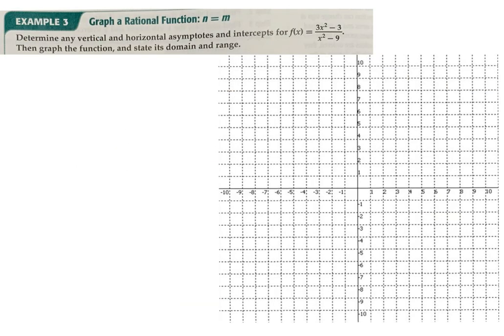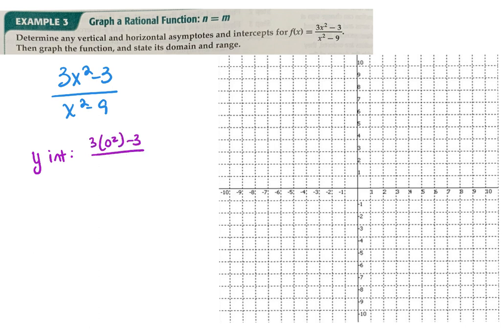Determine vertical and horizontal asymptotes and intercepts, then graph the function. We have 3x squared minus 3 over x squared minus 9. I start with intercepts. For the y-intercept, I plug in x equals 0: 3 times 0 squared minus 3 over 0 squared minus 9 gives me negative 3 over negative 9, which is 1 third. So my y-intercept is at (0, 1/3).